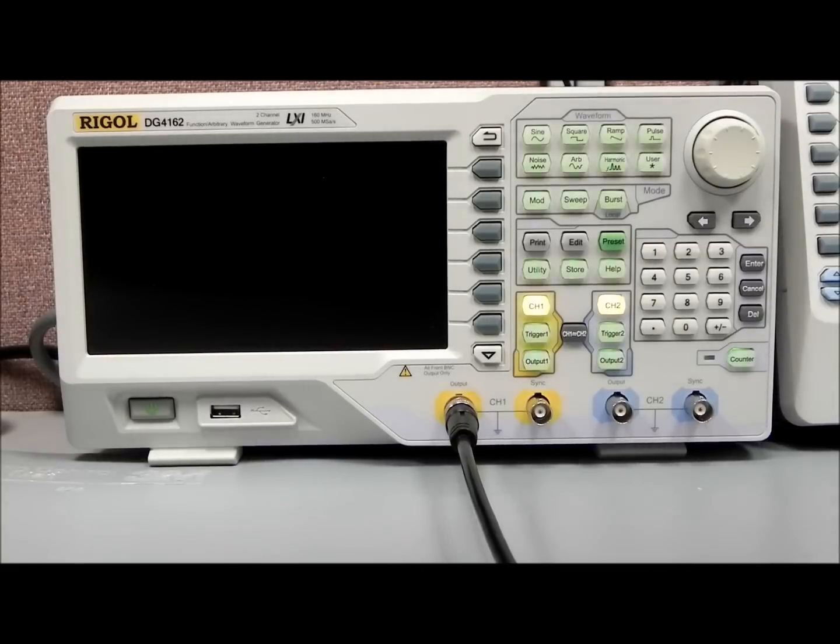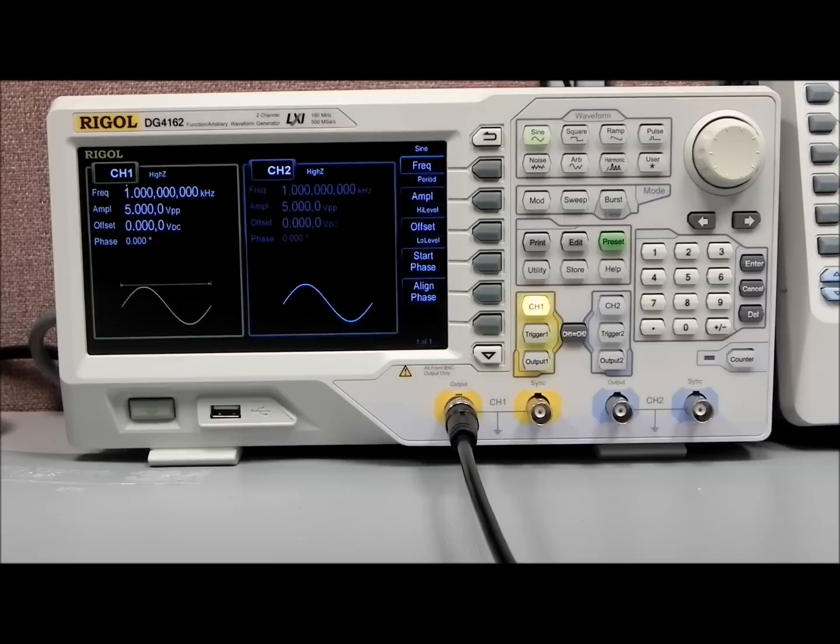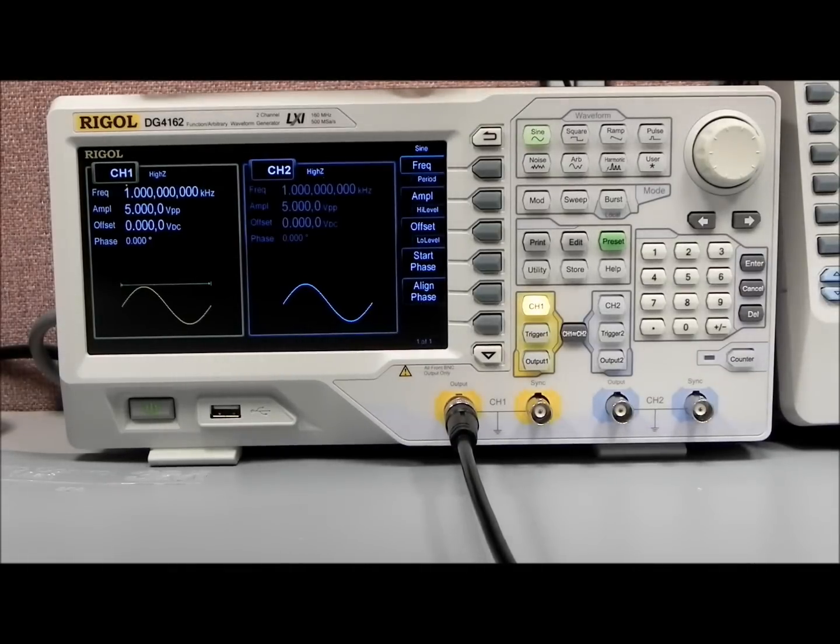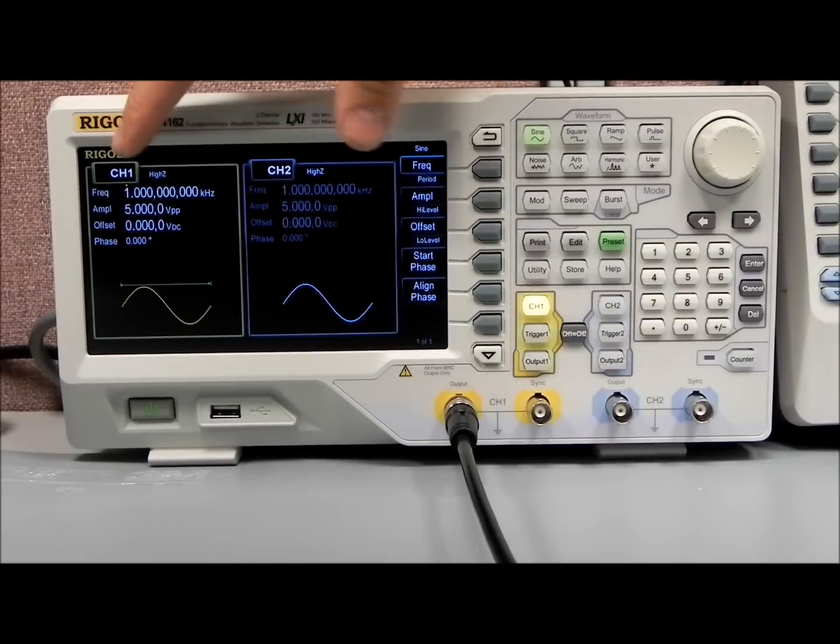Power up this DG4162. This is a 160 MHz model, but they come in 60, 100, and 160 MHz.